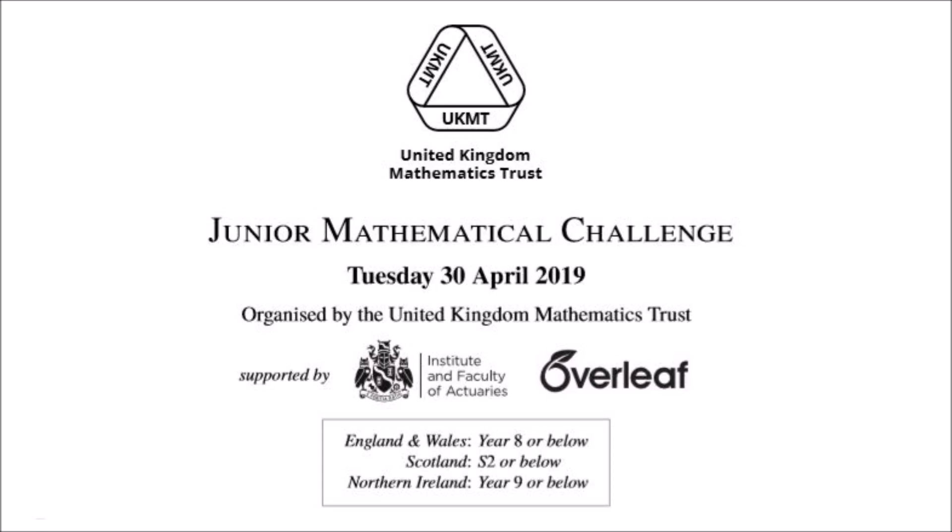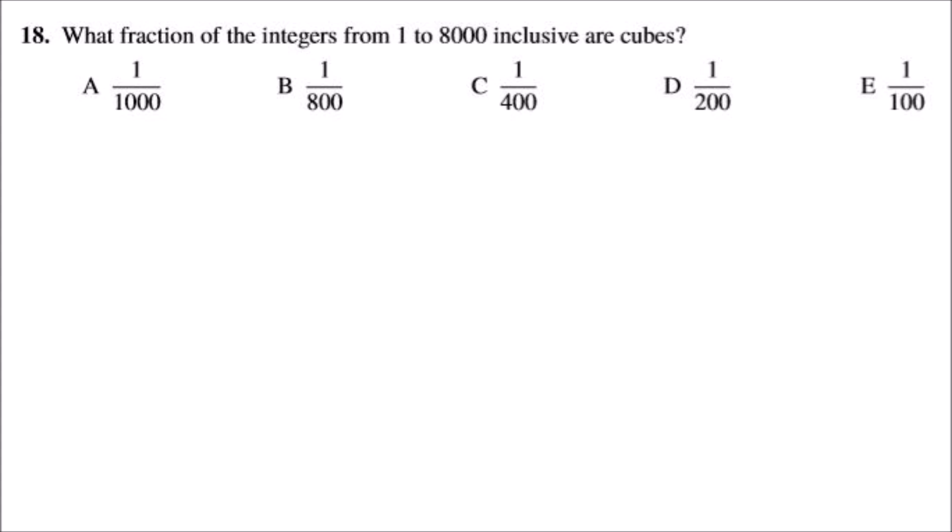Hello, today I'm going to be explaining question 18 from the UKMT Junior Math Challenge 2019 paper. What fraction of the integers from 1 to 8,000 inclusive are cubes? So we need to find the biggest cube number that is 8,000 or less.